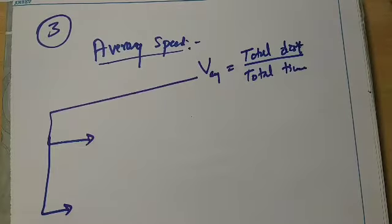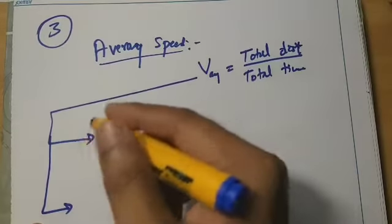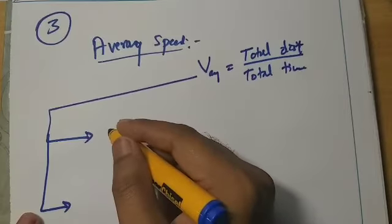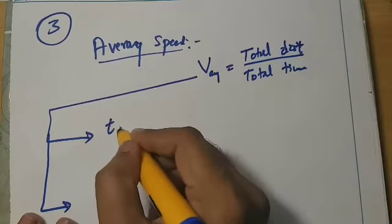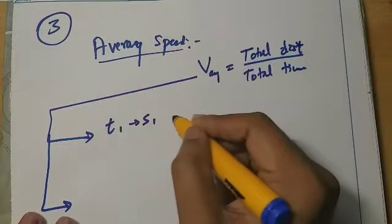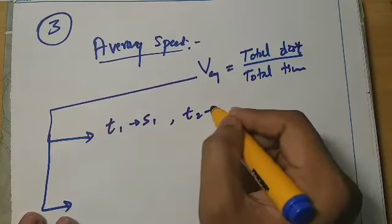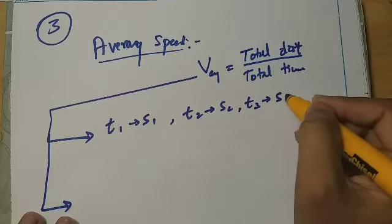Equal Time Intervals and Unequal Displacements covered. Let's do a time interval. In T1 seconds, one distance is S1. In T2 seconds, one distance is S2. In T3 seconds, one distance is S3.